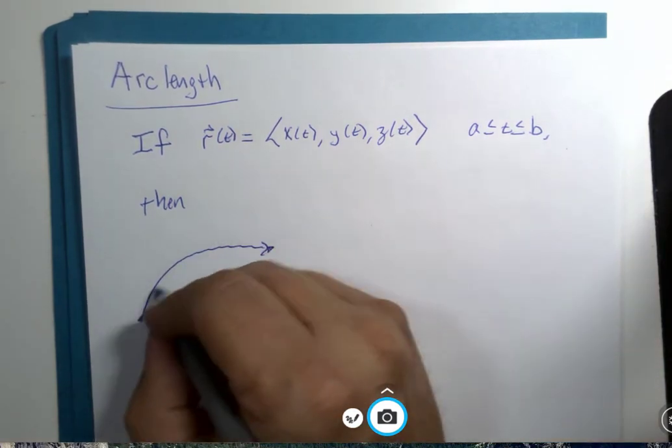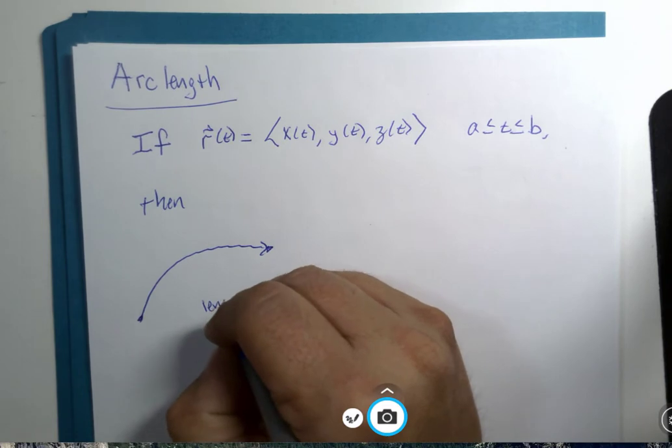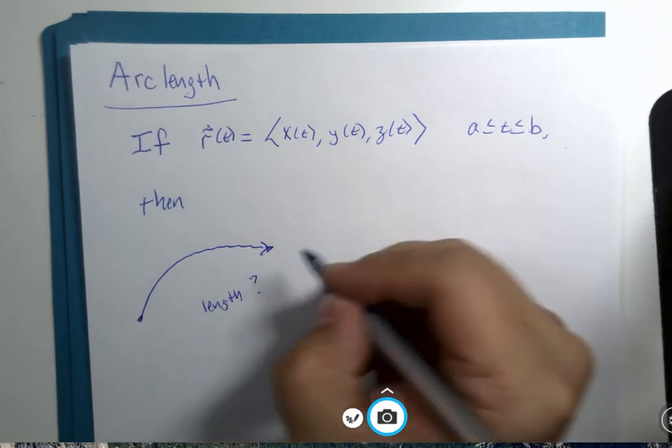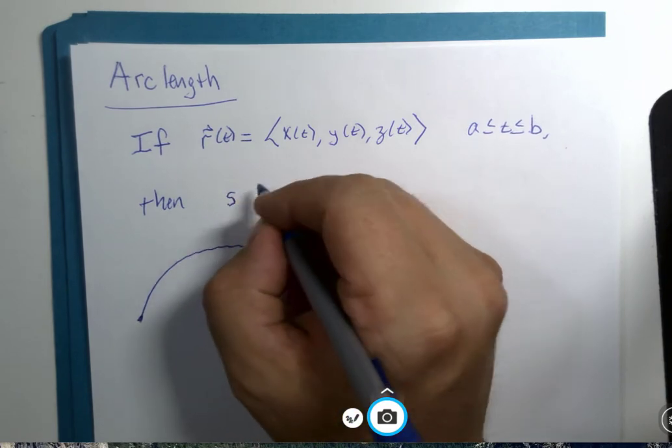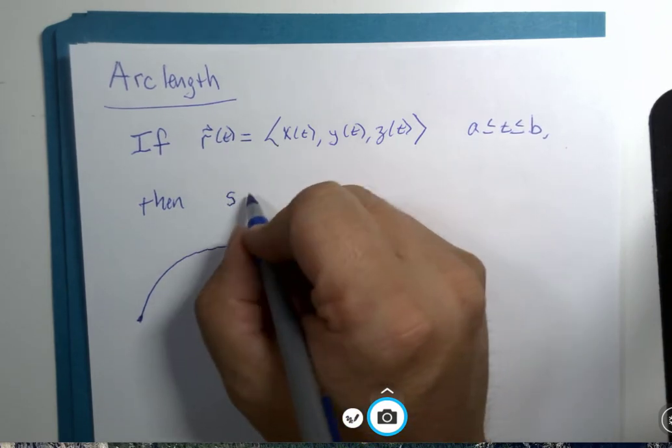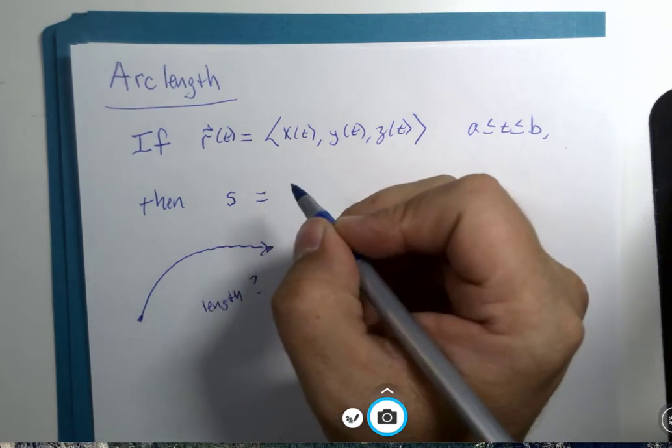And we want to measure the length. The letter symbol used for that is the lowercase s for arc length.